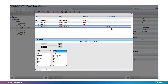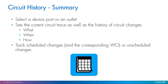In summary, the circuit history feature keeps track of circuit changes over time, and shows you a list of all dates and times when a change happened, shows you the resulting circuit, and now it also lets you know if the change was scheduled in a work order or was an unscheduled change.